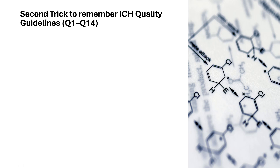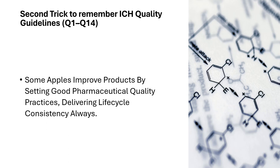Now we will discuss the second trick to remember the list of ICH Quality Guidelines. The sentence to remember is: 'Some apples improve products by setting good pharmaceutical quality practices, delivering life cycle consistency always.' You can use whichever of the two tricks you find more suitable.